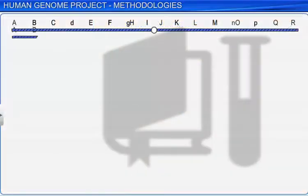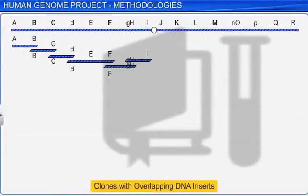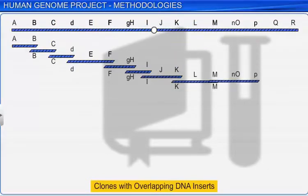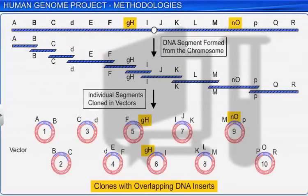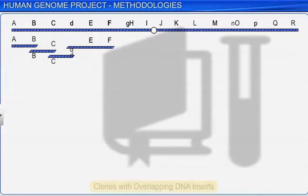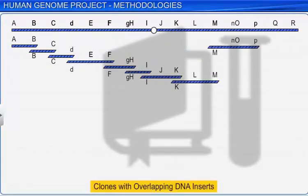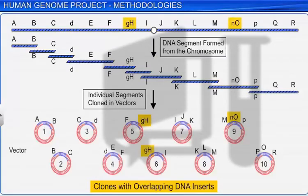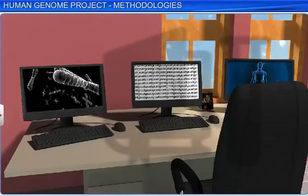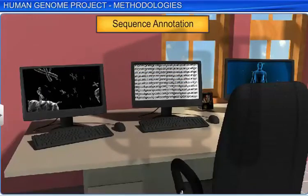As per Sanger's method, the cloned DNA sequences were arranged based on the overlapping regions present. Overlapping segments were generated; however, aligning them was not an easy task. Therefore, specialized computer-based programs were developed that annotated these sequences and assigned them to a chromosome.